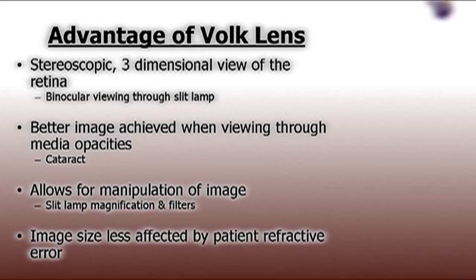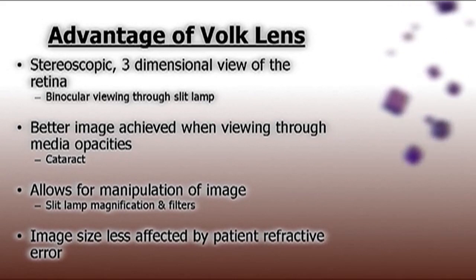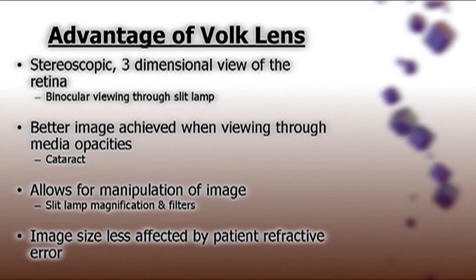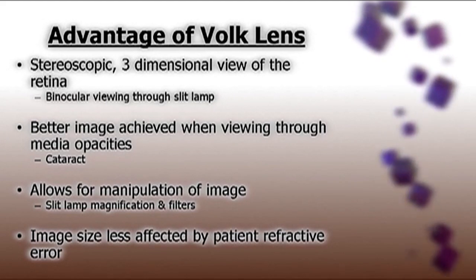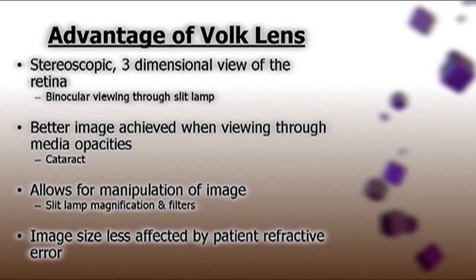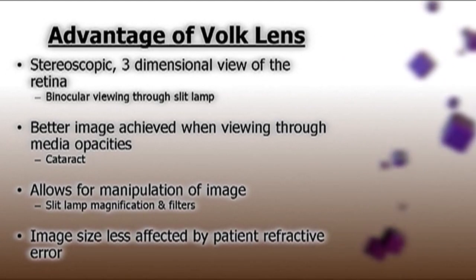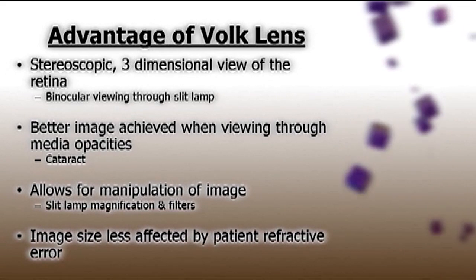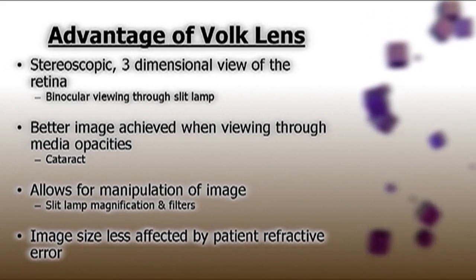The advantages of slit lamp biomicroscopy over direct ophthalmoscopy include the fact that you get a stereoscopic 3D view of the fundus. It tends to be easier to get an image, or you get a better image through media opacities. You can utilise the features of the slit lamp such as magnification or using a red free filter, and the image tends to be less affected by patient refractive error than images obtained from a direct ophthalmoscope.